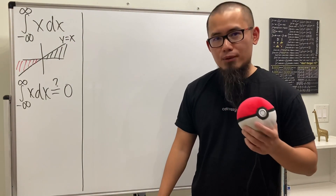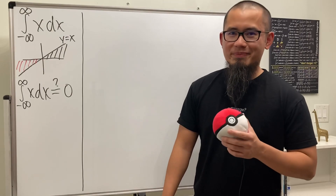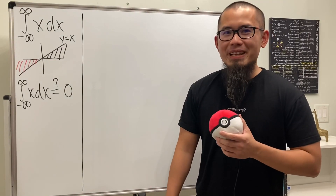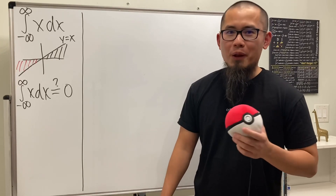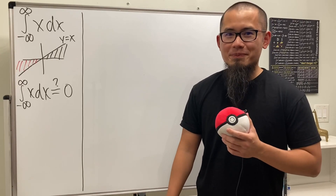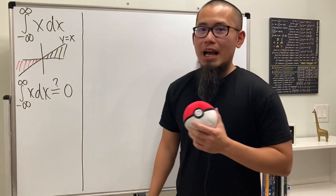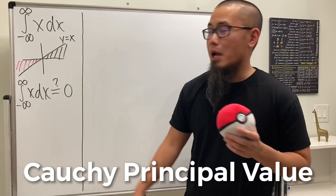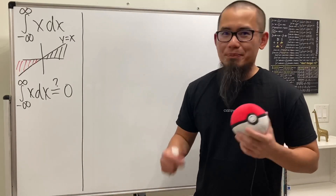For now, in Calculus 2, the answer is divergent. Later on, if you study higher-level mathematics — real analysis — you can say this has the Cauchy principal value being equal to 0. So it really depends on the context.